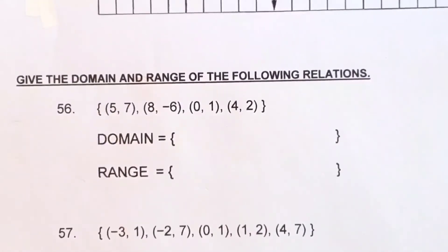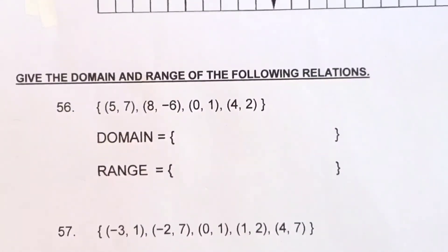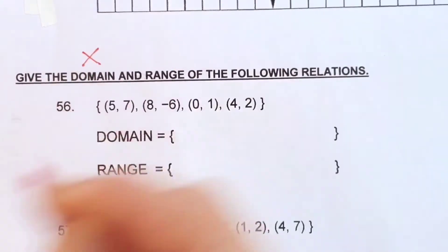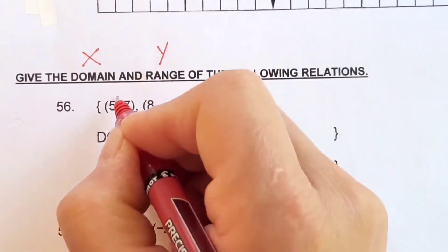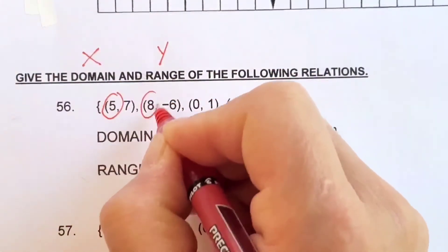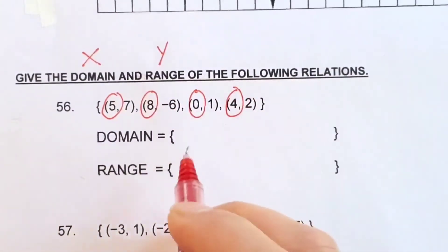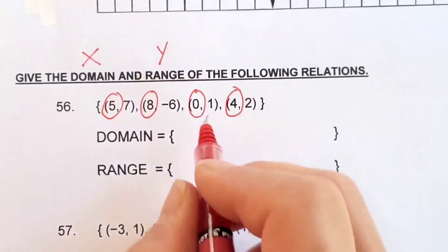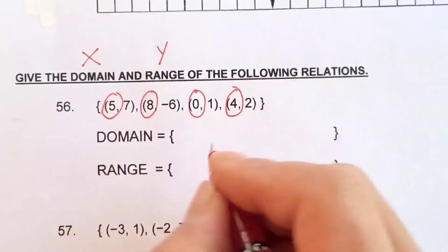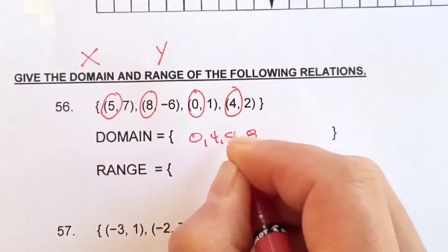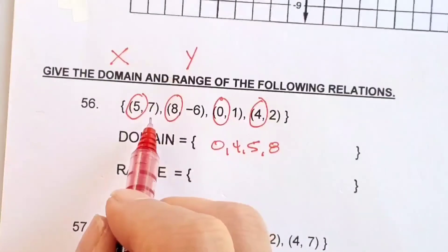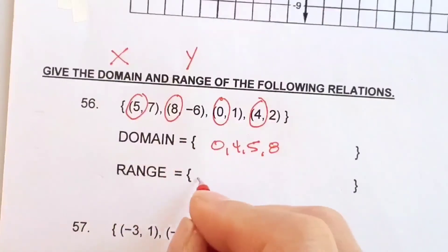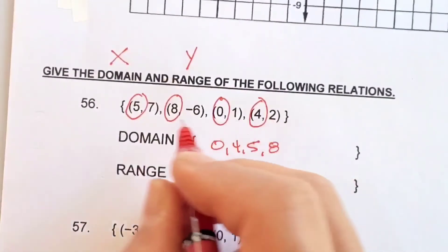Number 56: give the domain and range of the following relations. The domain is all your x-coordinates, and the range is all your y-coordinates. Circling the x-coordinates: 0, 4, 5, 8. The range — all y-coordinates — is 7, negative 6, 1, and 2. List them in order: negative 6, 1, 2, 7.